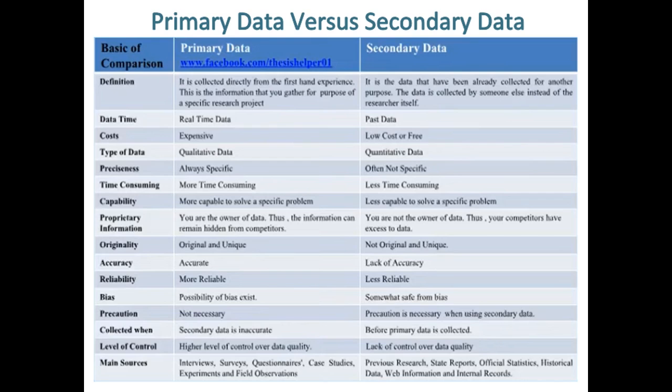While precaution is necessary when using secondary data. Primary data is collected when secondary data is inaccurate, while secondary data is collected before primary data is collected. Primary data has a higher level of control over data quality while secondary data has a lack of control over data quality.